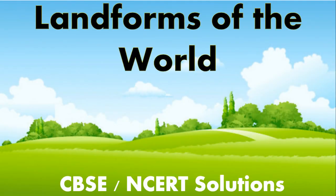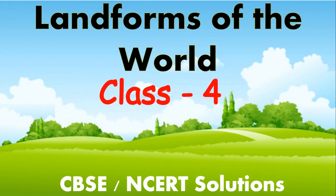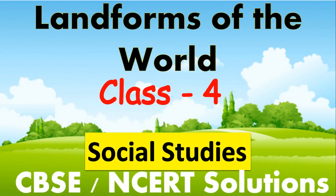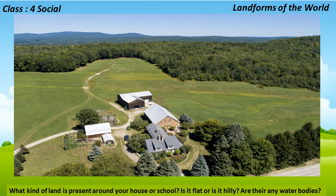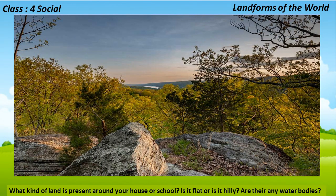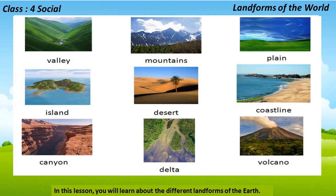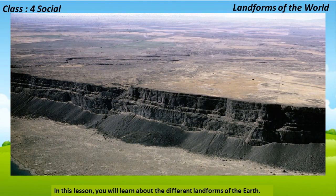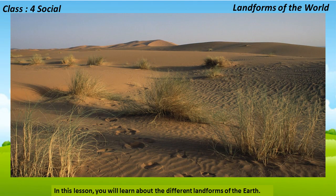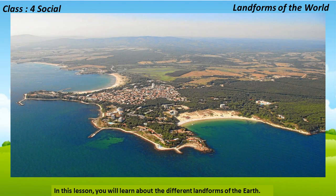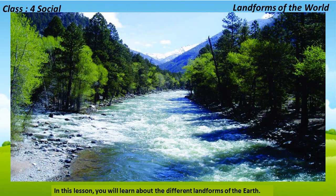Landforms of the world, class 4 social studies. Children, what kind of land is present around your house or school? Is it flat or is it hilly? Are there any water bodies? In this lesson, you will learn about the different landforms of the earth: mountains, valleys and passes, plateaus, plains and deserts, coasts, peninsulas, bays and islands, and rivers.